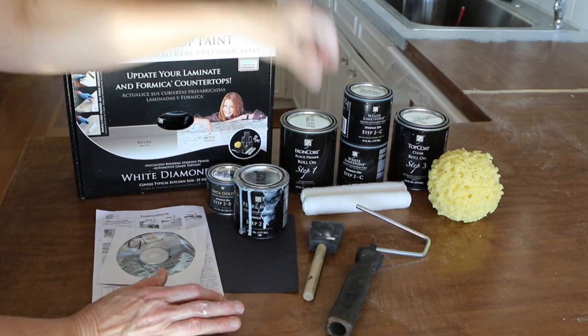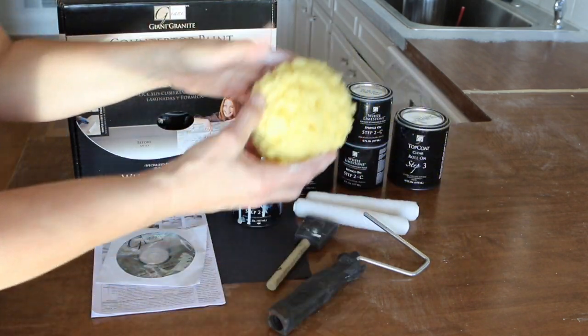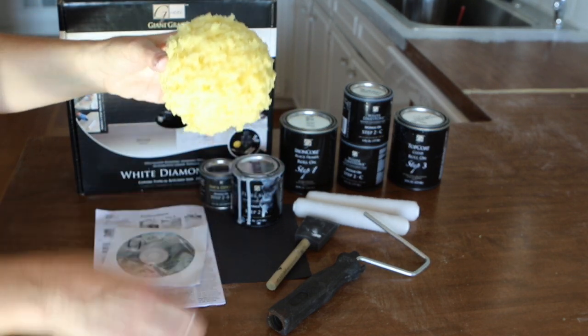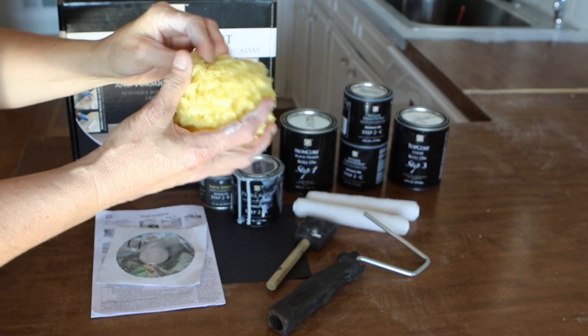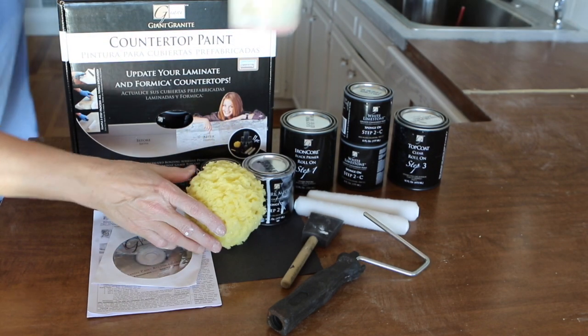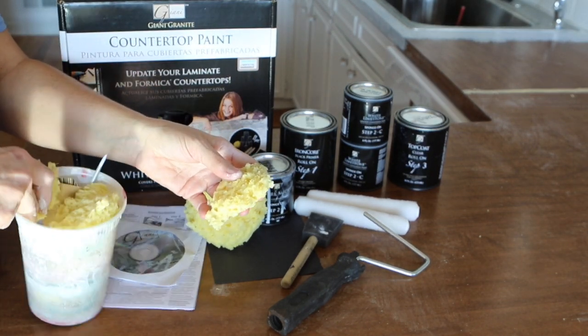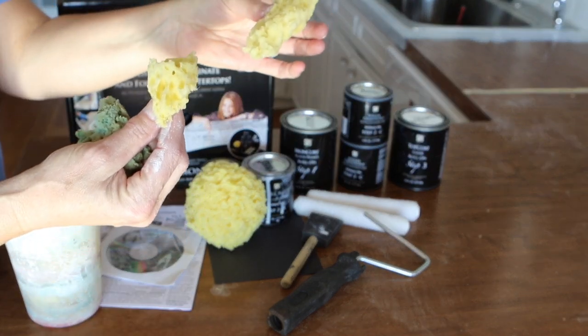You also get brush and rollers and the sponge. The sponge is what gives the texture for granite, but for marble, I ended up ripping this apart. I didn't really want to have a granite look, so I took the sponge and I made little pieces so that I could make veining for marbling, which I'm going to show you how I do that.